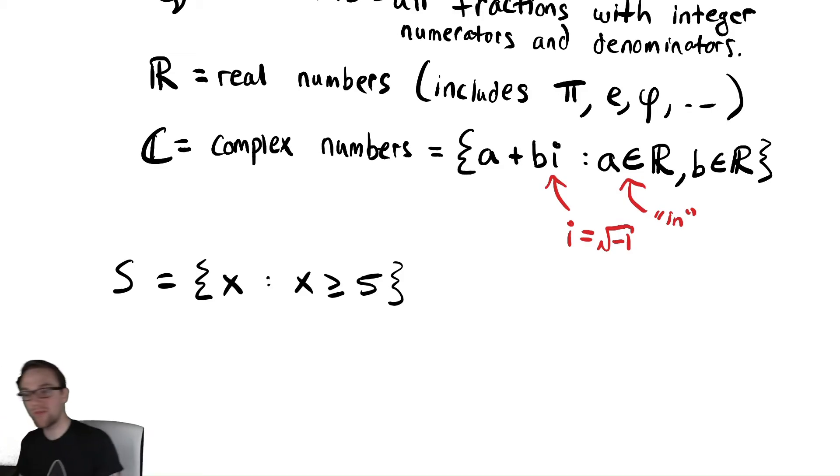We have one final important set, potentially the most important set, which is the empty set. It's like a zero with a line through it. This is the set that contains no elements.